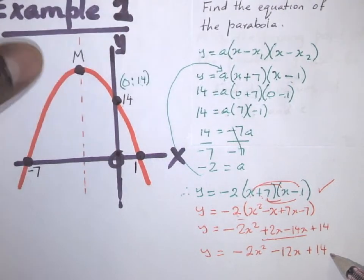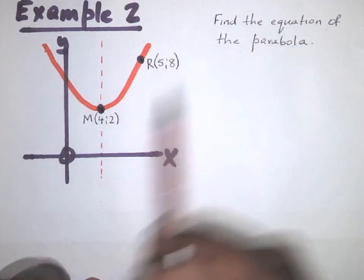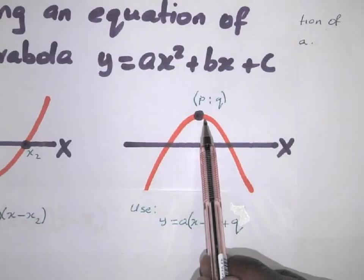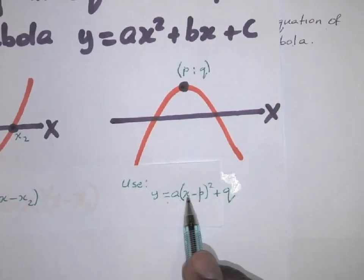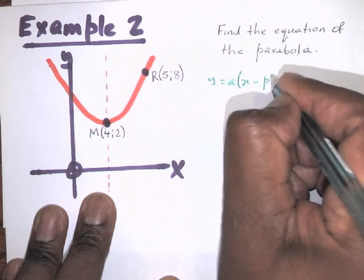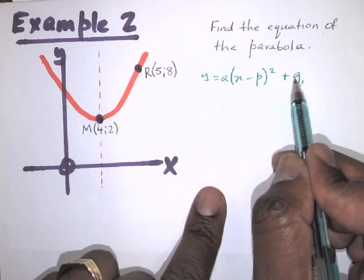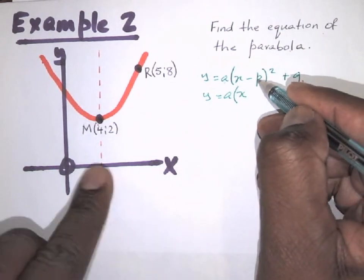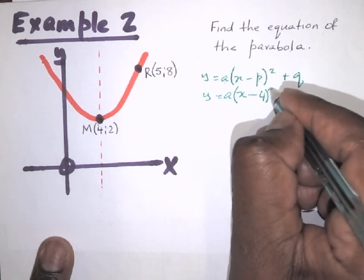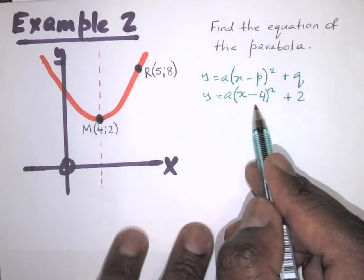Here's another example. Find the equation of this parabola. We can see a dotted line indicating the turning point. Since the graph has a turning point, we use the formula y = a(x − p)² + q. The turning point shown is at (−4, 2), so we substitute: y = a(x − (−4))² + 2, which gives y = a(x + 4)² + 2. Note that q = 2 keeps its sign unchanged.